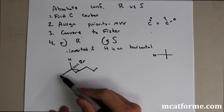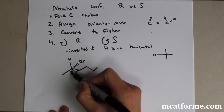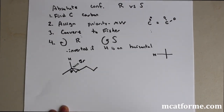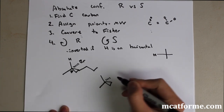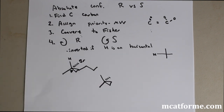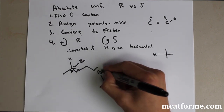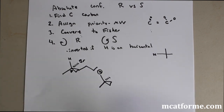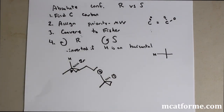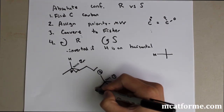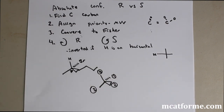So first, find the chiral carbon — all the other carbons here are achiral because they have two hydrogens. This one is our chiral carbon, that's step one. Now assign priority by redrawing the molecule simply. Hydrogen is the lowest priority (number 4), bromine is highest (number 1) because it's the heaviest, the long chain is number 2, and the methyl group is number 3. Now we convert this into a Fischer projection.